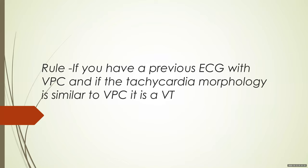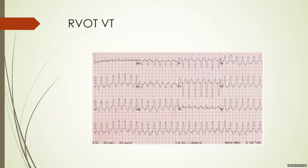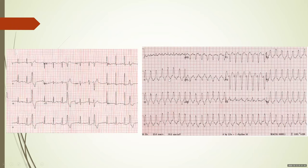Another rule: if a previous ECG shows a ventricular premature complex (VPC) and the tachycardia morphology is similar to the VPC, it is a VT. If the tachycardia morphology is similar to the sinus beat, it is an SVT. For example, an RVOT VPC has an LBBB morphology with positive waves in II, III, and aVF. If the wide complex tachycardia morphology matches this VPC morphology, it confirms VT; if it matches the sinus beat, it's SVT.